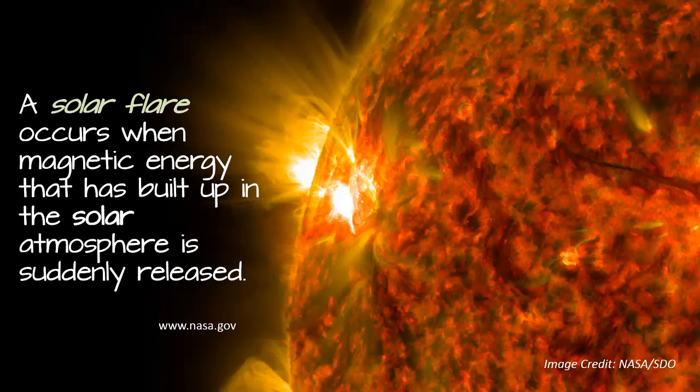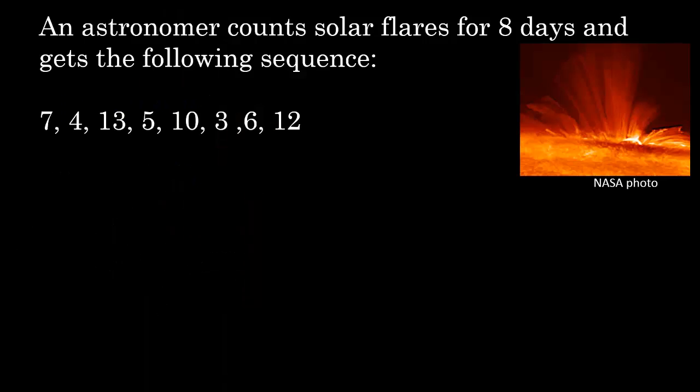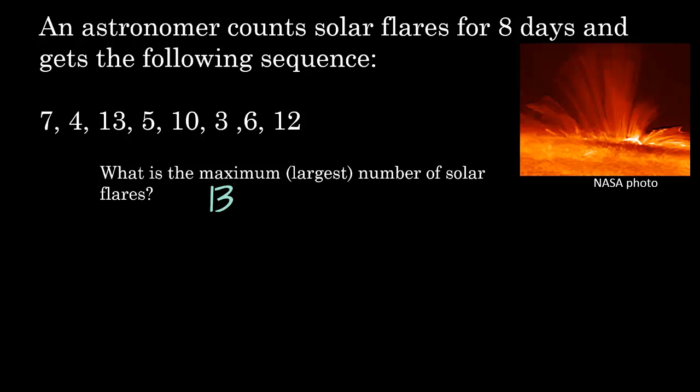A solar flare occurs when magnetic energy that is built up in the solar atmosphere is suddenly released. An astronomer counts solar flares for 8 days and gets the following sequence. What is the maximum or largest number of solar flares? We're going to look and find the largest number, which is 13. What is the minimum or smallest number of solar flares? It turns out that's 3.